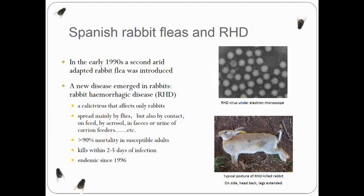While Brian Cook was in Spain studying those fleas, a new disease emerged in rabbits and swept through Europe, causing devastation in wild populations within their native range — that was rabbit hemorrhagic disease. It was identified as a calicivirus specific to rabbits, so its potential as a biological control in Australia was immediately apparent.